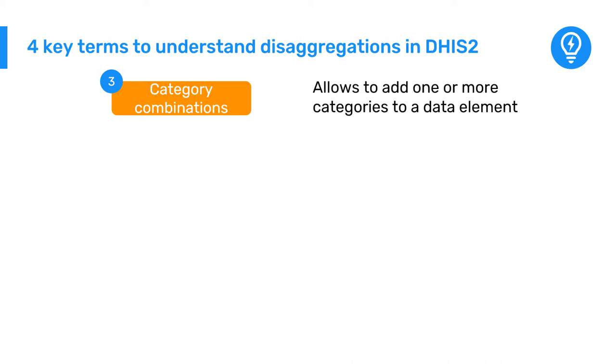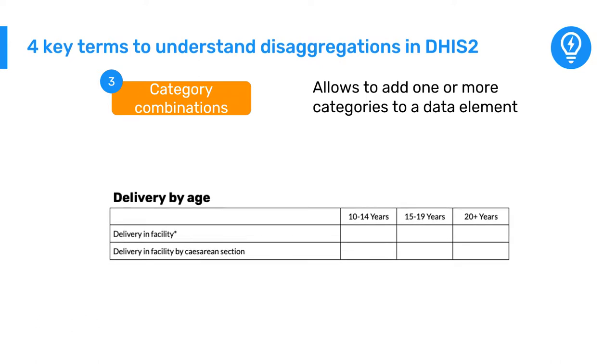For the delivery section of the RMN-CAH dataset, we would need to create a category combination for the RMN-CAH age group. This is an example of a category combination that only contains one category.